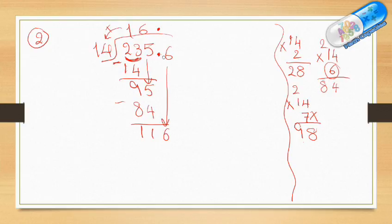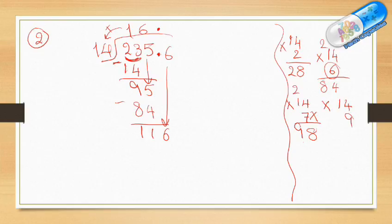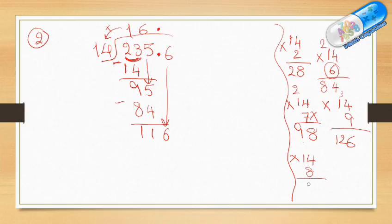Get down the 6, which is after the decimal point, so the answer digit goes after the decimal point as well. 116 divided by 14 — let's try 14 times 9: 4 times 9 is 36, carry 3, 1 times 9 is 9 plus 3 is 12, giving 126. Since 126 is more than 116, let's try 14 times 8: 4 times 8 is 32, carry 3, 1 times 8 is 8 plus 3 is 11, giving 112. Since 112 is less than 116 and very close, I take 8.